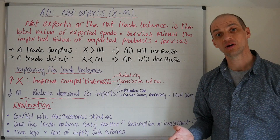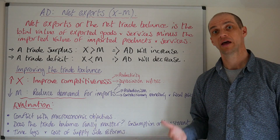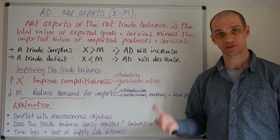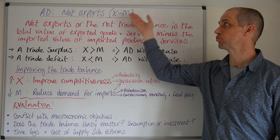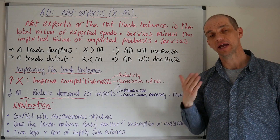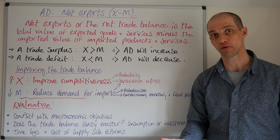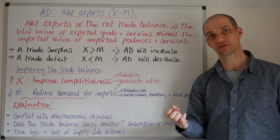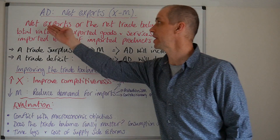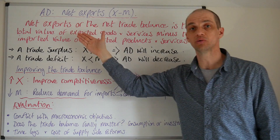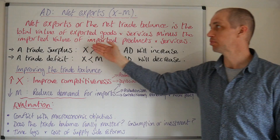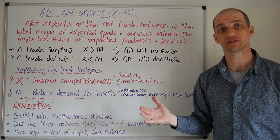Hi everyone. Let's now look at our last component part of aggregate demand, and that is of course net exports, also known as the trade balance, represented by exports minus imports. Exports are an injection into the circular flow of income, while imports are a withdrawal from it. Net exports, or the net trade balance, is the total value of exported goods and services minus the value of imported products and services.